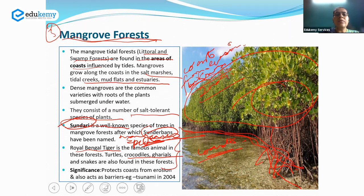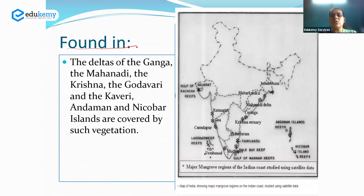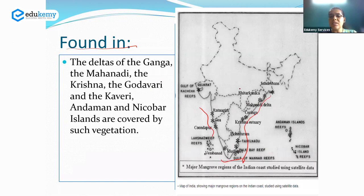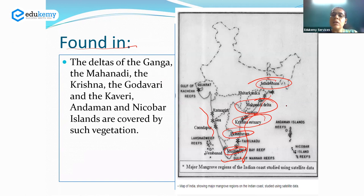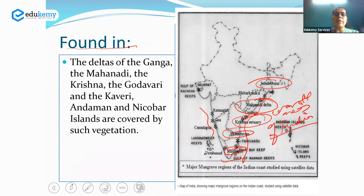When studying mangroves, we should also know the specific names of mangroves found in India. They are found in coastal areas, including the Sundarban mangrove forest, along the Mahanadi Delta, the Krishna estuary, and sites called Pichavaram and Muthupet in Tamil Nadu.